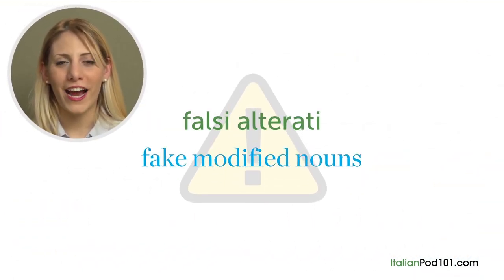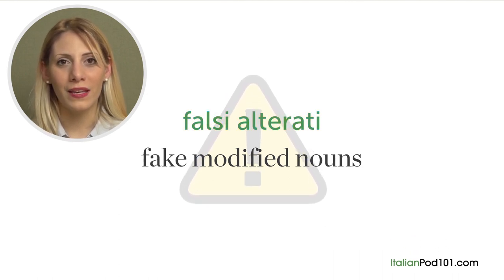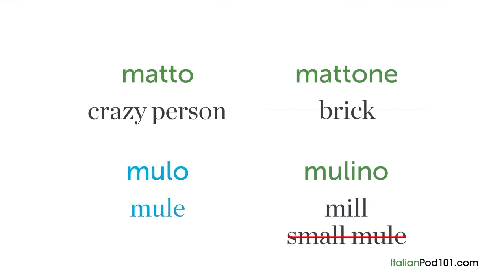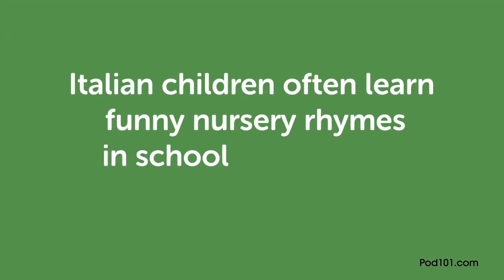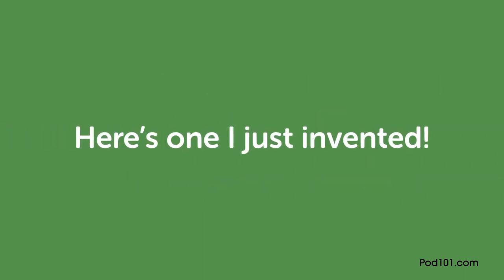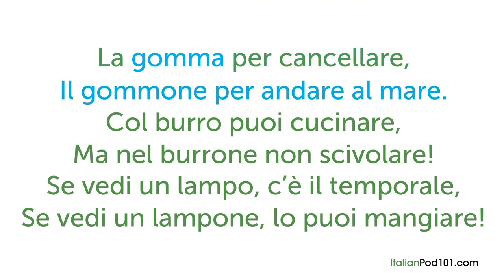Be aware of fake modified nouns — 'falsi alterati.' These are words that look like modified nouns but mean a totally different thing. 'Matto' means crazy person but 'mattone' is not a big crazy man — it's a brick. 'Mulino' means mill, not a small mule — that's 'mulo.' Italian children often learn funny nursery rhymes about these false modified nouns. Here's one: 'La gomma per cancellare, il gommone per andare al mare. Col burro puoi cucinare, ma dal burrone non scivolare. Se vedi un lampo, c'è il temporale. Se vedi un lampone, lo puoi mangiare.'